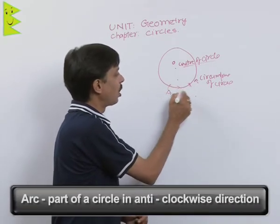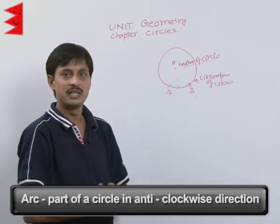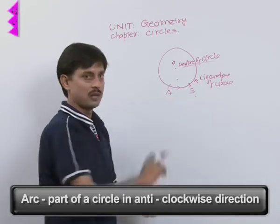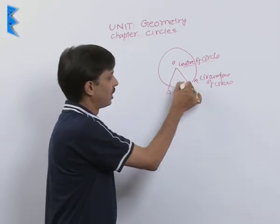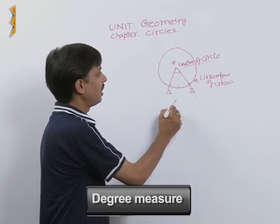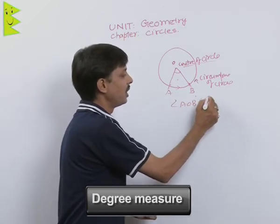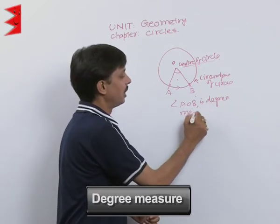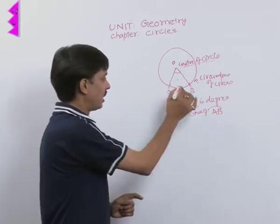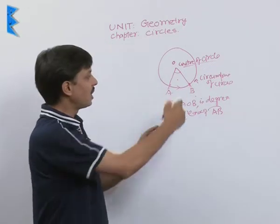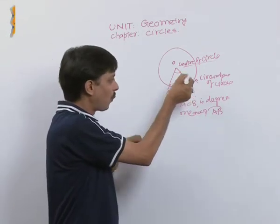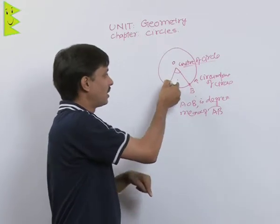The part of the circle — in anti-clockwise direction — is known as its arc. When the endpoints of an arc, say A and B, are joined to the center, the angle so formed is known as its degree measure. Angle AOB is the degree measure of arc AB. Always remember, the direction of an arc is anti-clockwise.